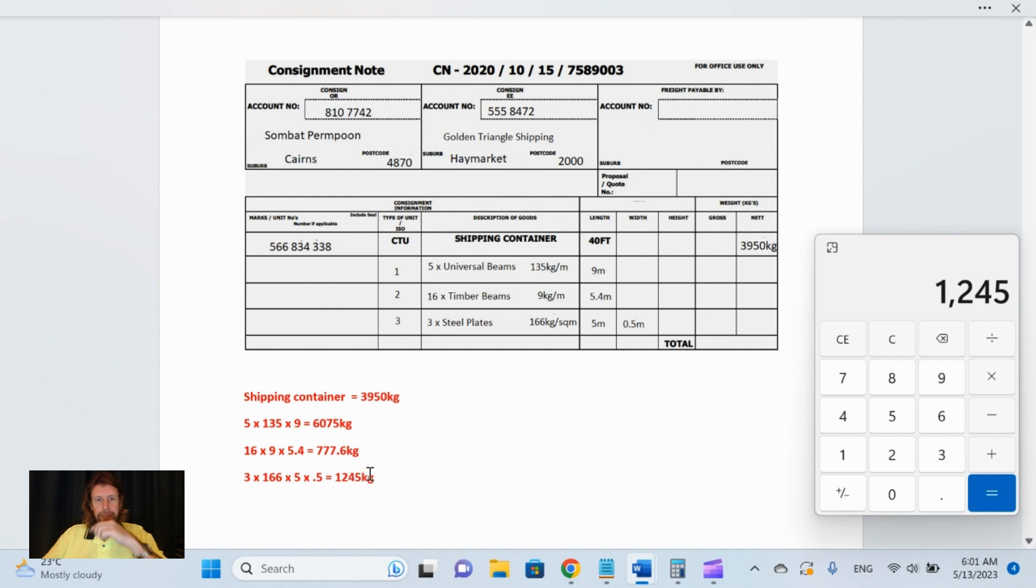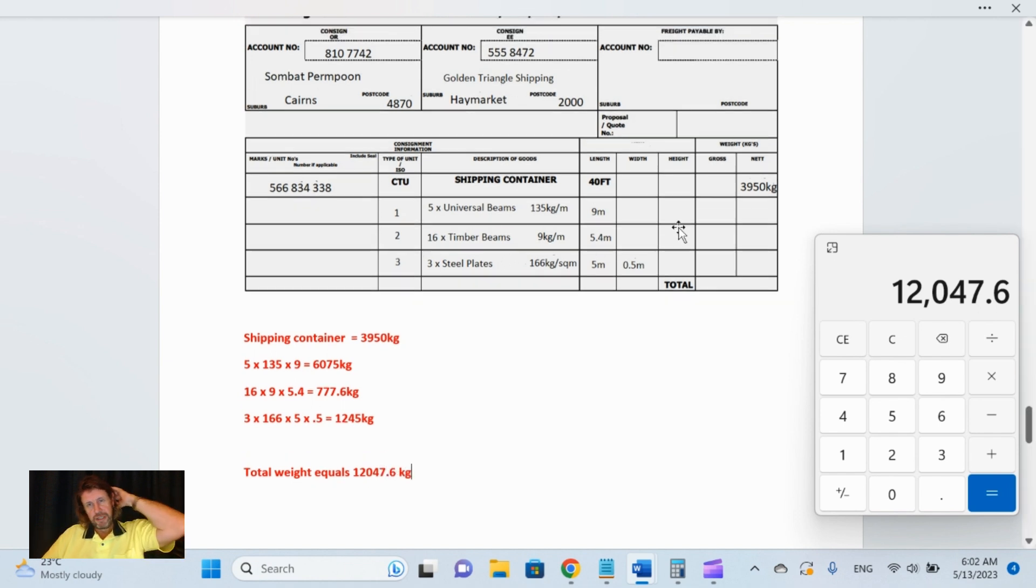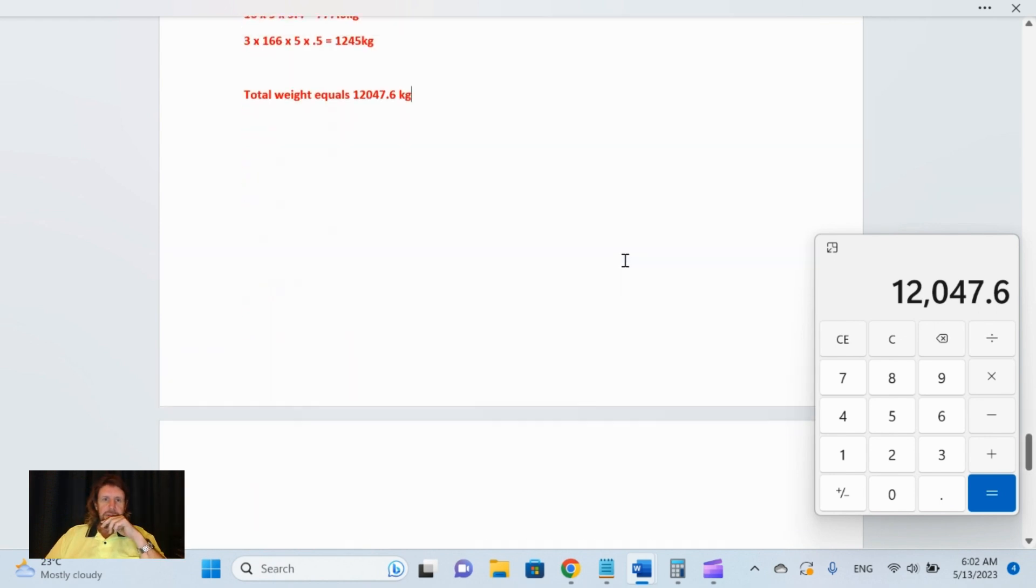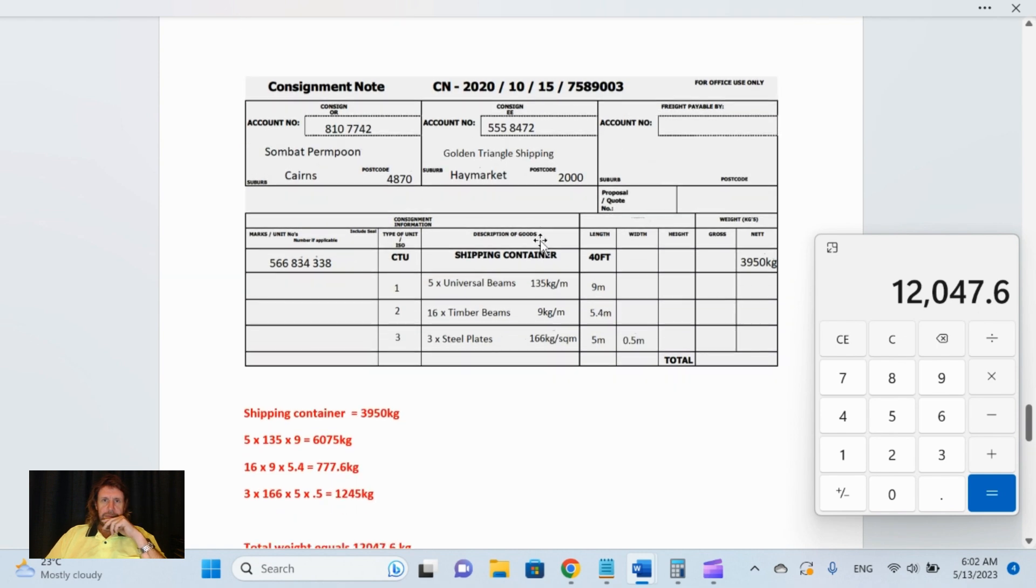Then what we've got to do is add them all up. 1245 plus 777.6 plus 6075 plus 3950 equals—so the total of the lot equals total weight equals 12047.6 kilograms. So check it and check it again when you do that question, just adding the container weight and these different things that are loaded on the consignment note.